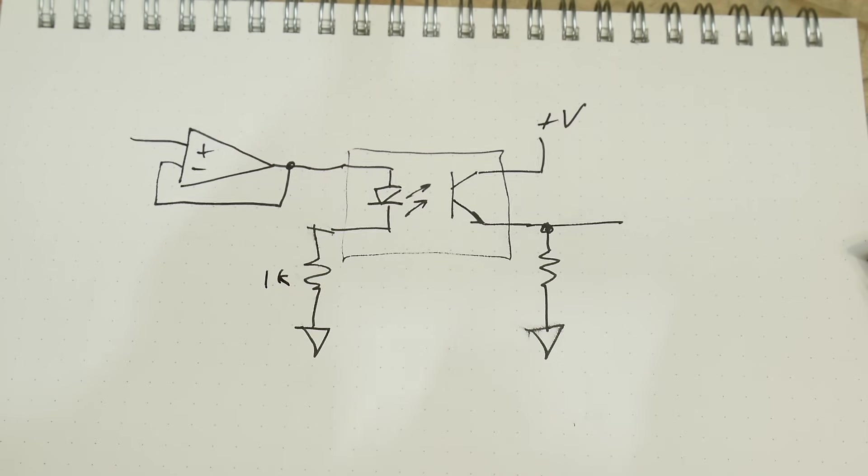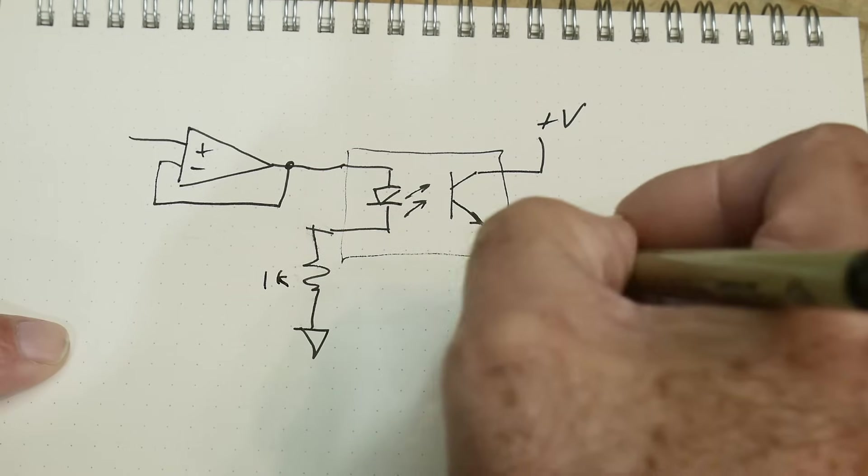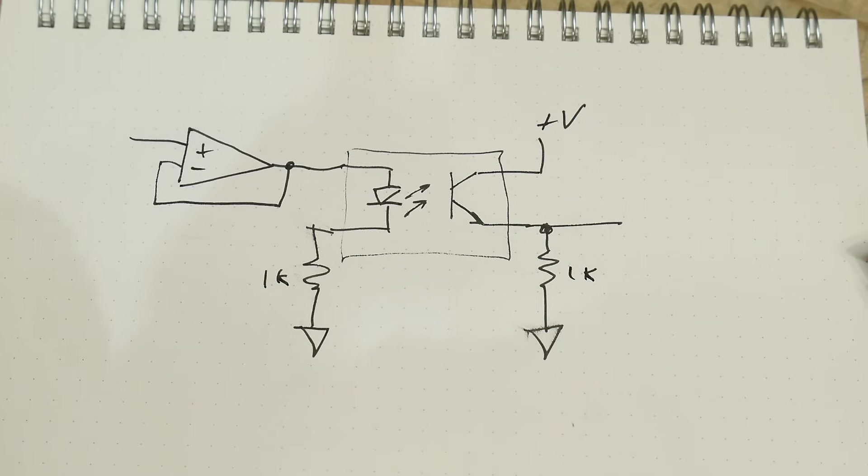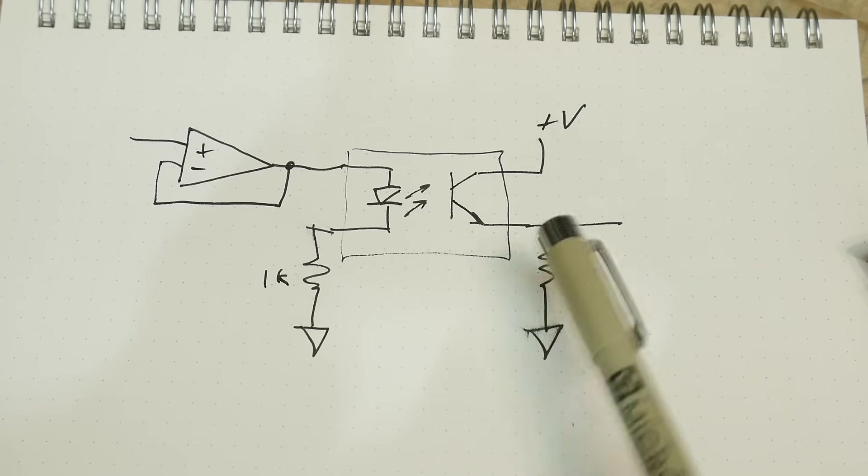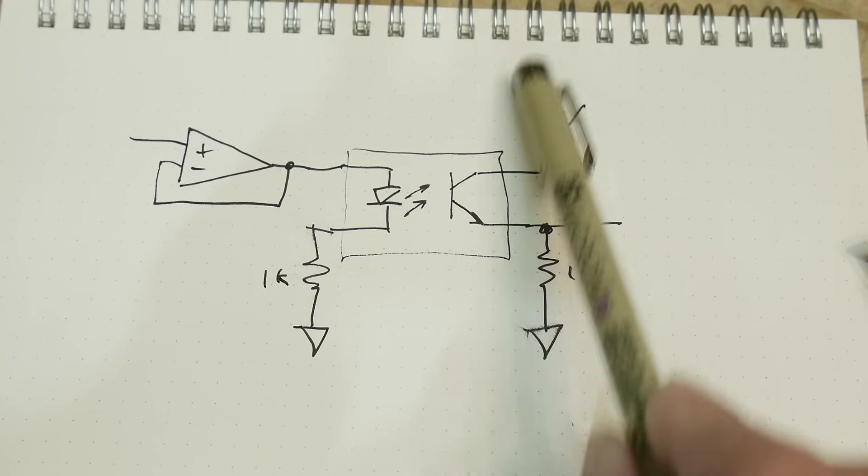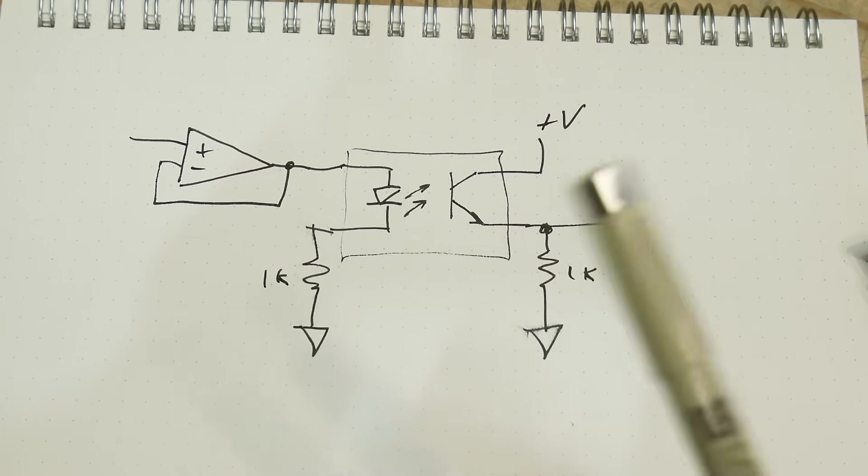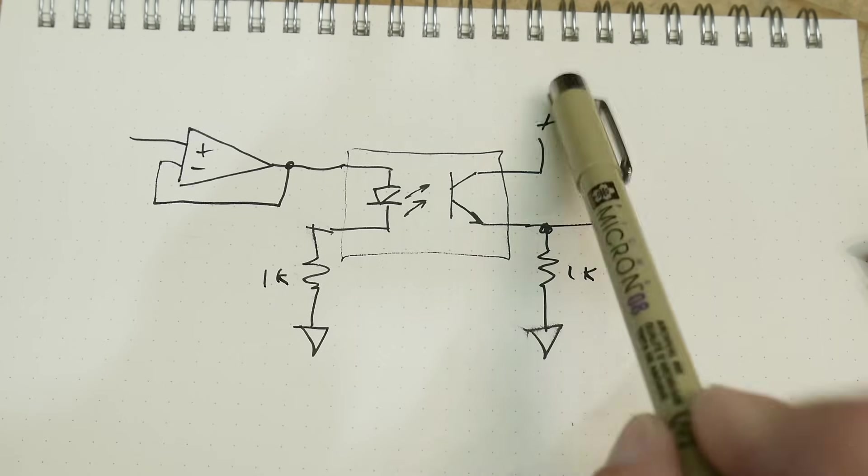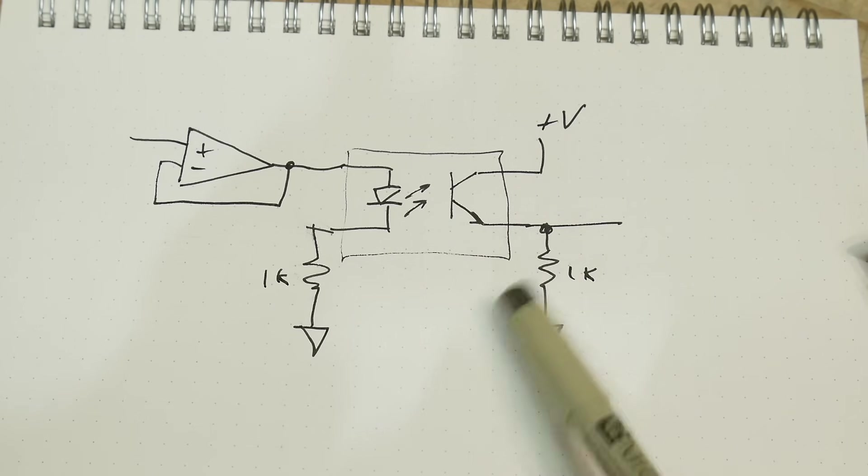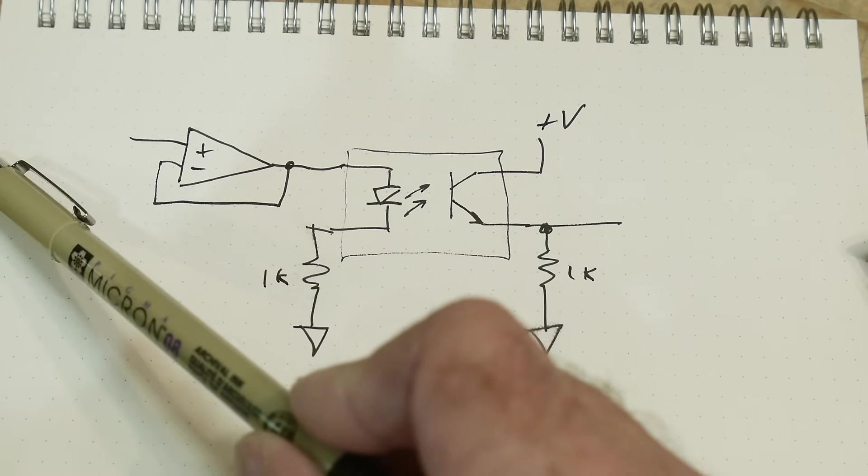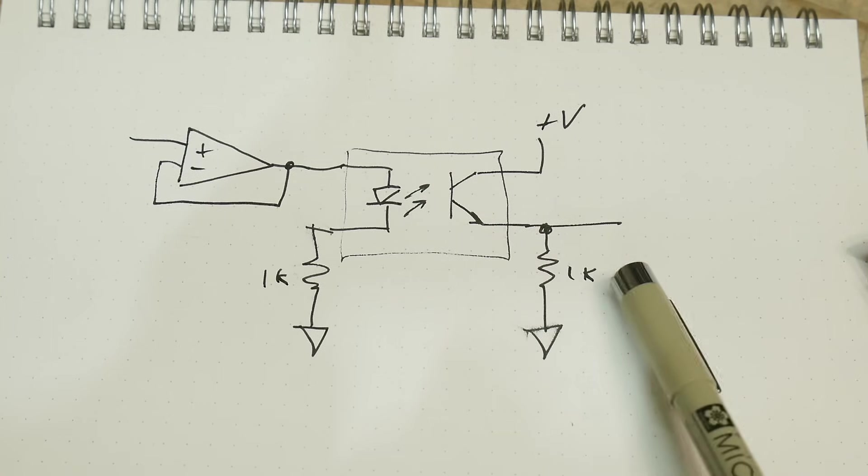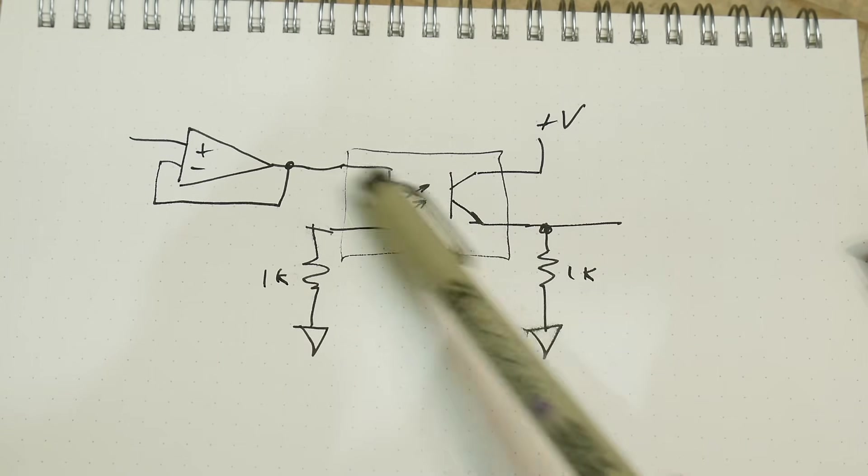Then it's going to go through the optocoupler and go on the other side. This is wired as an emitter follower. You can either put the resistor on the high side or low side, depending on what you want to do. I'm doing it this way because if I have a voltage going up on this side, it will also go up on this side. It's an optocoupler follower.